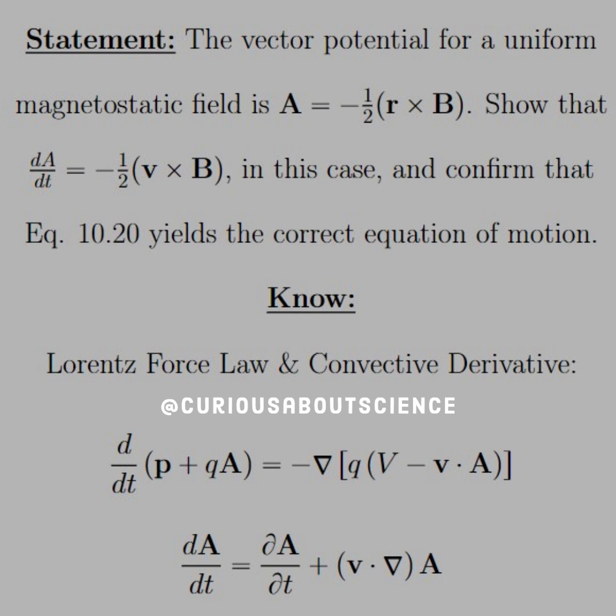I will go ahead and put more notes in the description that we can actually read through in detail, or you can read the book. But our statement for this particular problem reads: the vector potential for a uniform magnetostatic field is A equal negative one-half r cross B. We've seen that before in chapter 5. Show that dA/dt is equal to negative one-half v cross B in this case, and confirm that equation 10.20 yields the correct equation of motion.